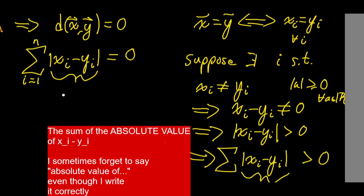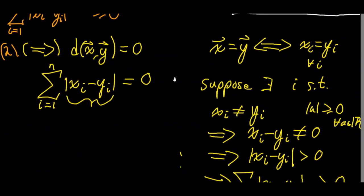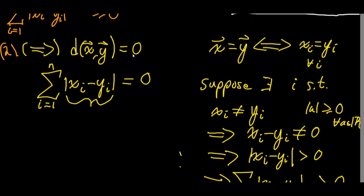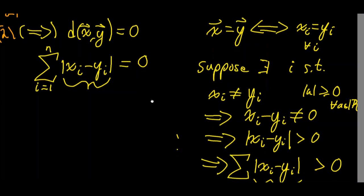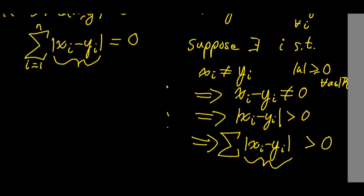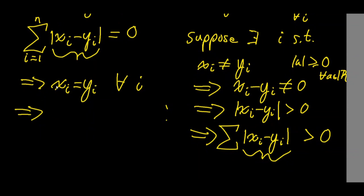Therefore, there cannot exist an i such that xi is not equal to yi. Therefore, xi equals yi for all i, which means each component of the x vector equals the corresponding component of the y vector. By the definition of vector equality, x equals y, which is what we wanted to show.